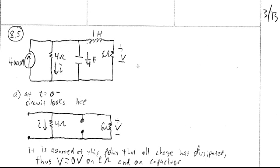To find conditions at 0+, we first look at the circuit at t equals 0 minus. The current source is an open circuit, the capacitor has reached steady state so it also behaves like an open circuit, and the inductor behaves like a short circuit. With no active source, the capacitor is fully discharged and all inductor current has dissipated, so the current is 0 amps.